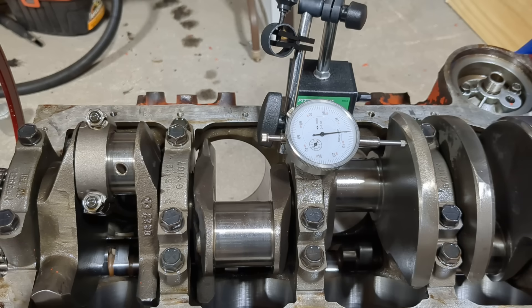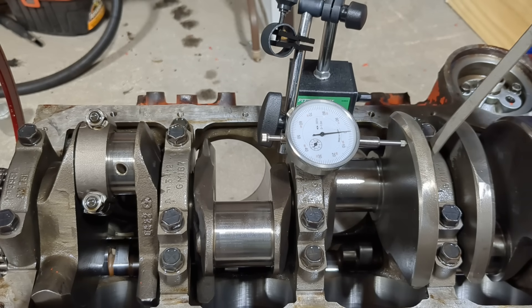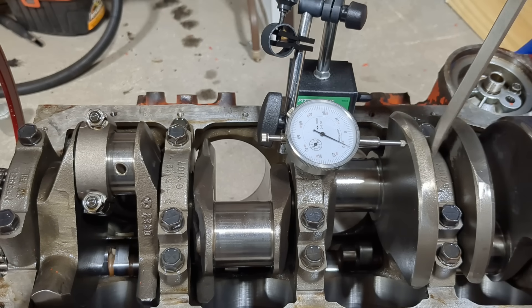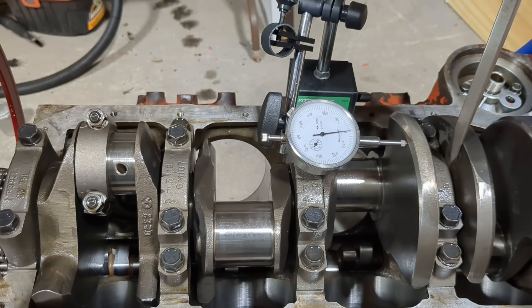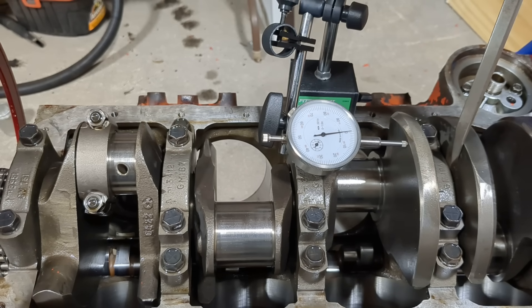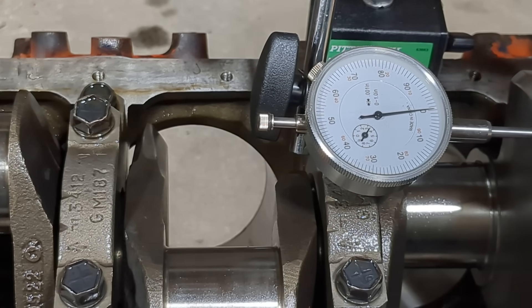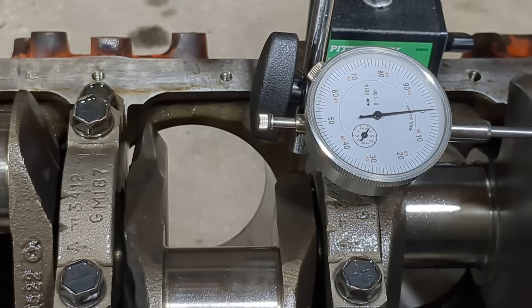First of all you need to know what your thrust bearing clearance is. I've got a block set up here that we've had in here, we're getting ready to redo it. We just got it tore down, just kind of doing some checks. You can see the dial indicator that we have.